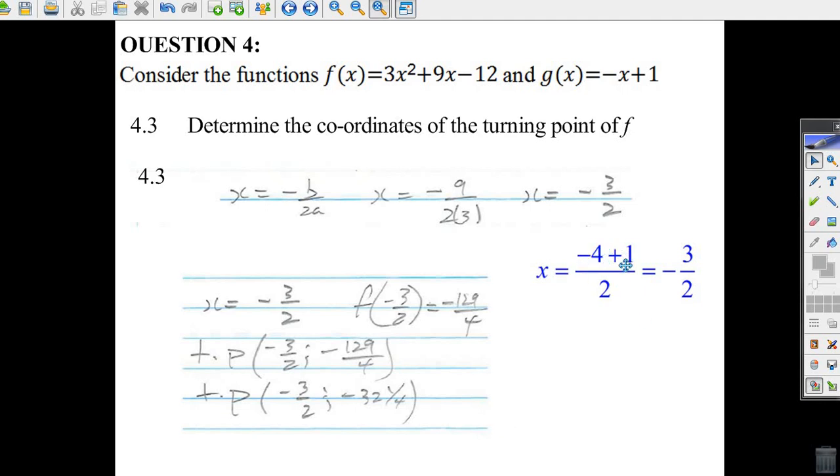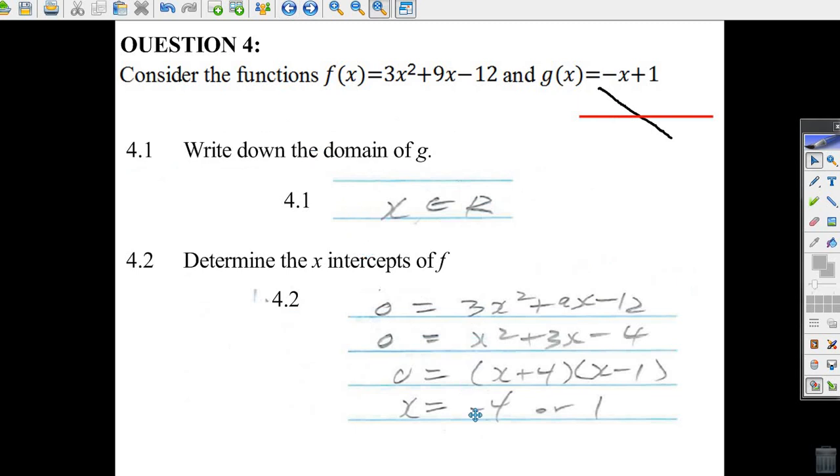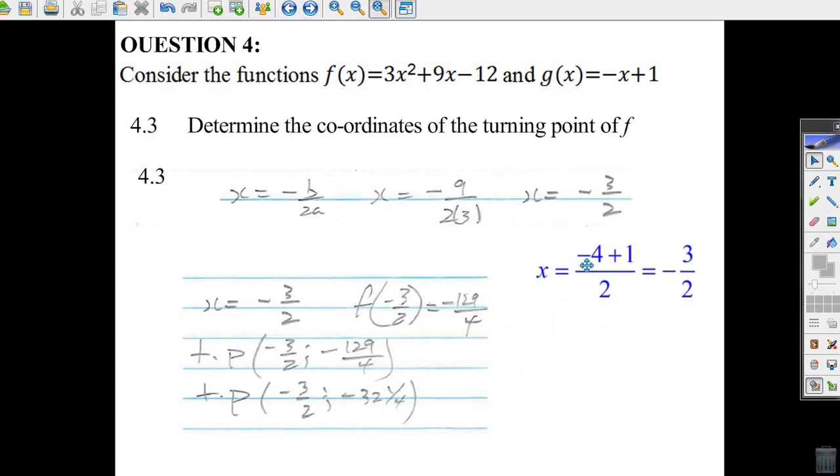There's an easier way to find the axis of symmetry. Back here, we saw that the x-intercepts are minus 4 and 1. If you know the x-intercepts, just add them and divide by 2, and you'll get the axis of symmetry, the x-coordinate of the turning point.